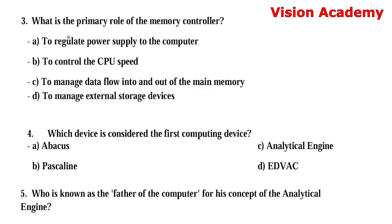Question number 3: What is the primary role of the memory controller? Option A: to regulate power supply to the computer. Option B: to control the CPU speed. Option C: to manage data flow into and out of the main memory. Option D: to manage external storage devices. The right answer is Option C, to manage data flow into and out of the main memory.